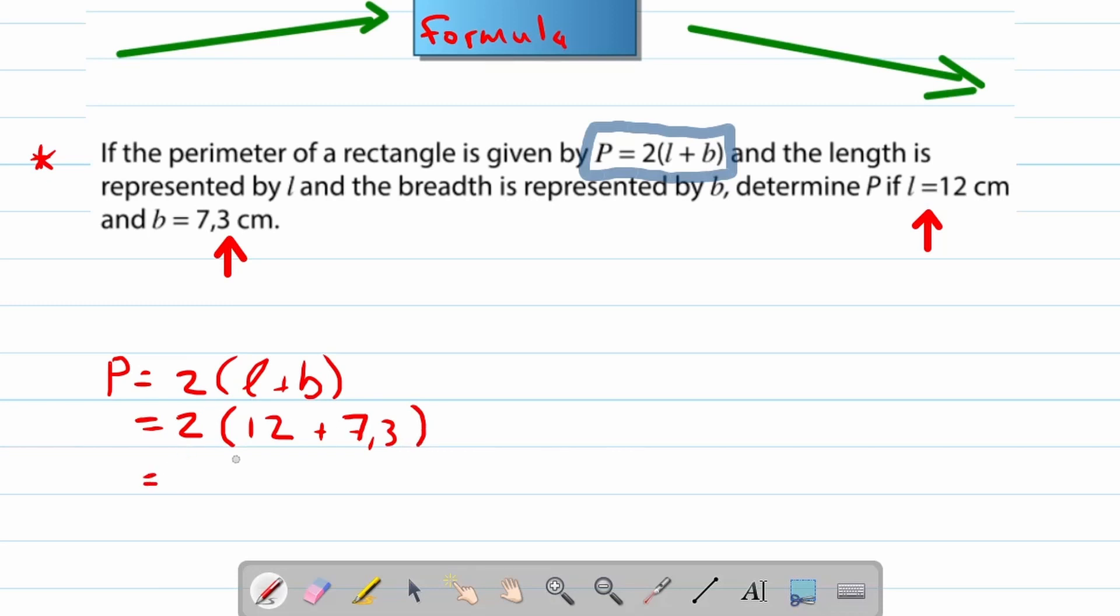Then the next steps will be to simplify. So this will become 2 times, what is 12 plus 7.3? It is 19.3. And then what is 2 times 19.3? That will be 38.6 centimeters.